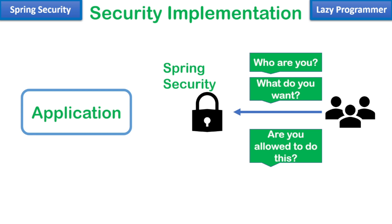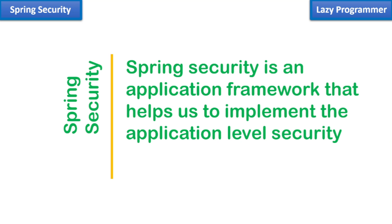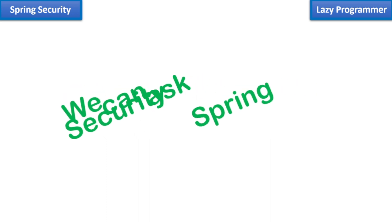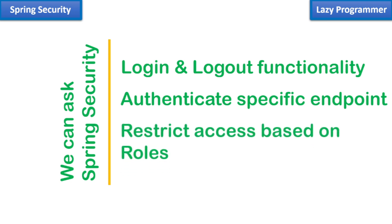Spring Security is similar to hiring that full-time guard that will intercept all requests and, based on the configuration and user roles, let them use the resources. From a definition point of view, Spring Security is an application framework that helps us implement application-level security. We can configure Spring Security to match our needs — login and logout functionality, specific endpoints allowed for public access or requiring authentication, and endpoint access based on user roles, such as preventing normal users from accessing admin endpoints. All these things come under access control.